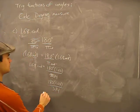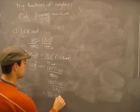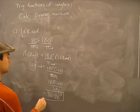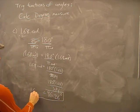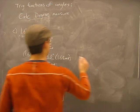This is going to equal somewhere in the neighborhood of 96.26 degrees. So 1.68 radians equals that many degrees.